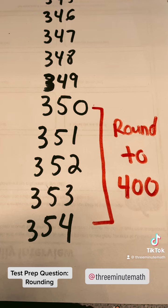When rounding to the nearest 100, any number 50 or greater will round up. So these numbers, 354, 353, 352, and 351, will all round up to 400.